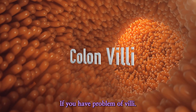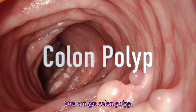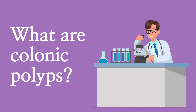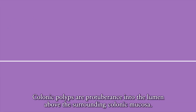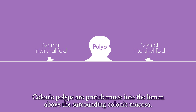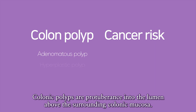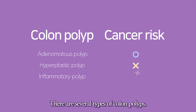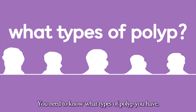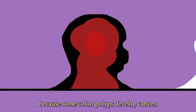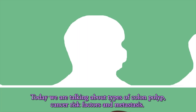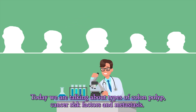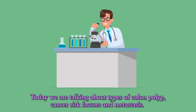If you have a problem with your villi, you can get a colon polyp. What are colonic polyps? Colonic polyps are a protuberance into the lumen above the surrounding colonic mucosa. There are several types of colon polyps. You need to know what types of polyp you have because some colon polyps develop cancer. Today we are talking about types of colon polyp, cancer risk factors, and metastasis.